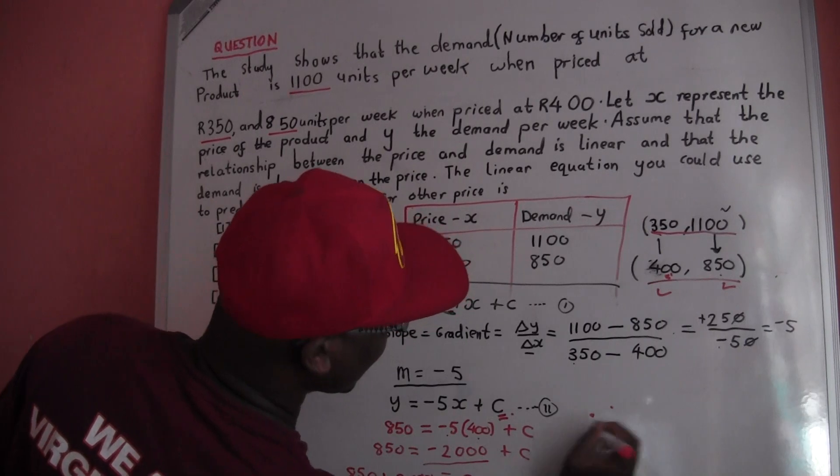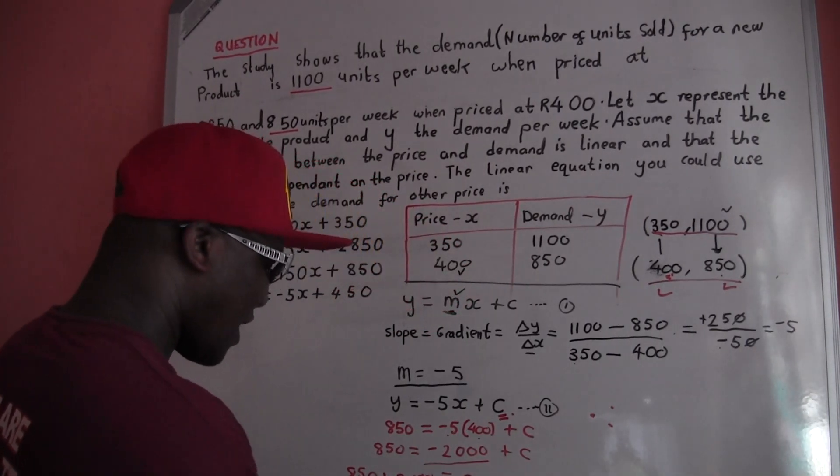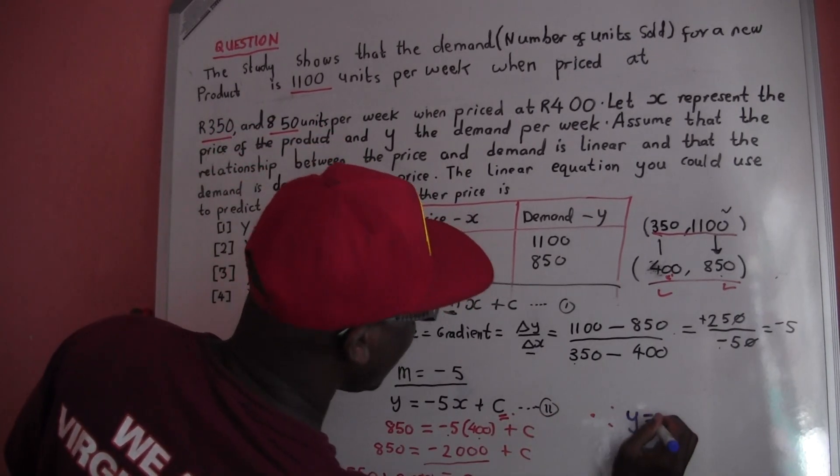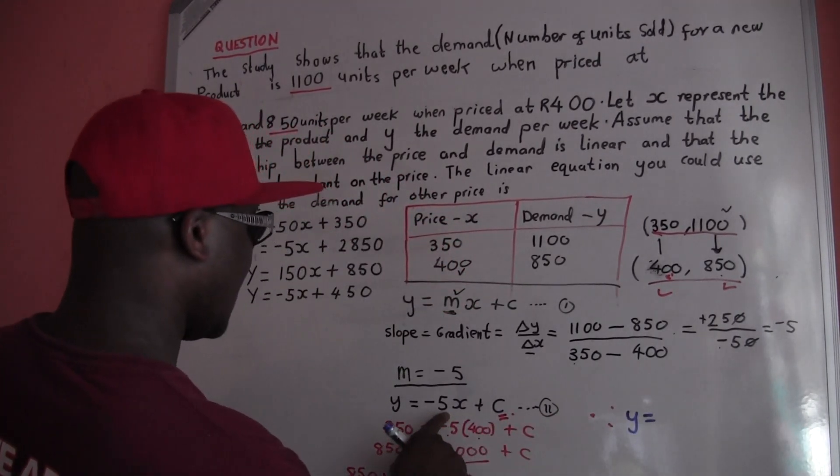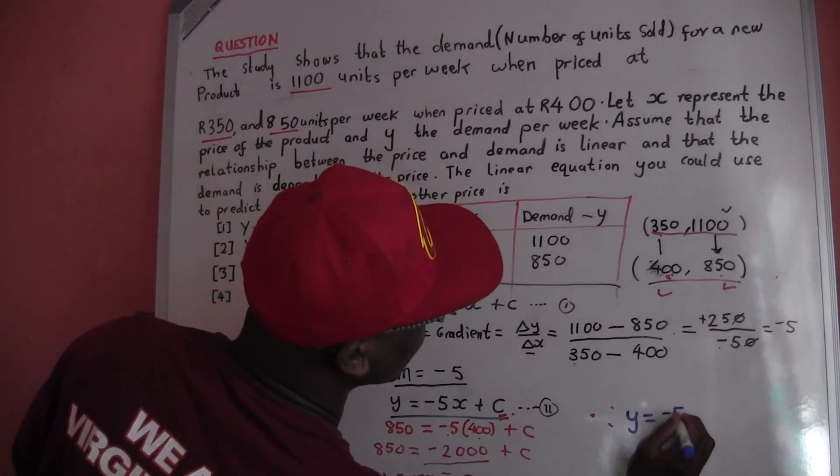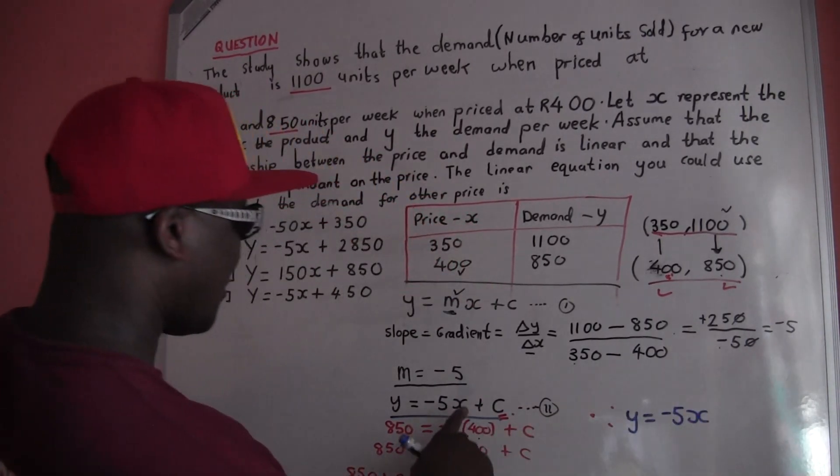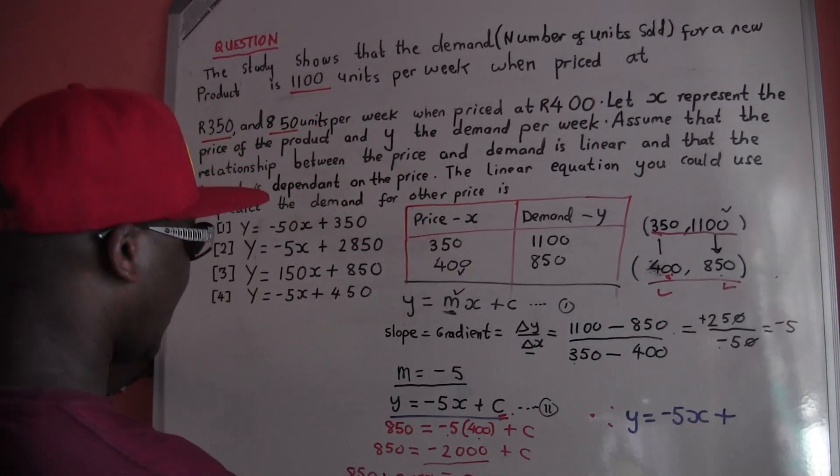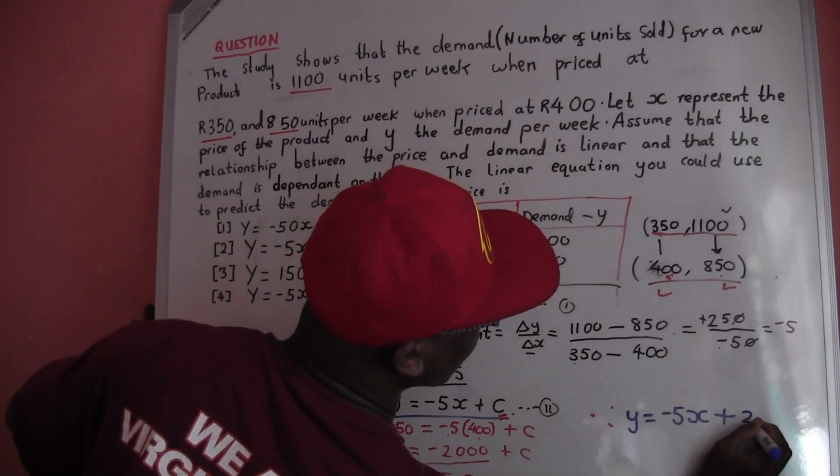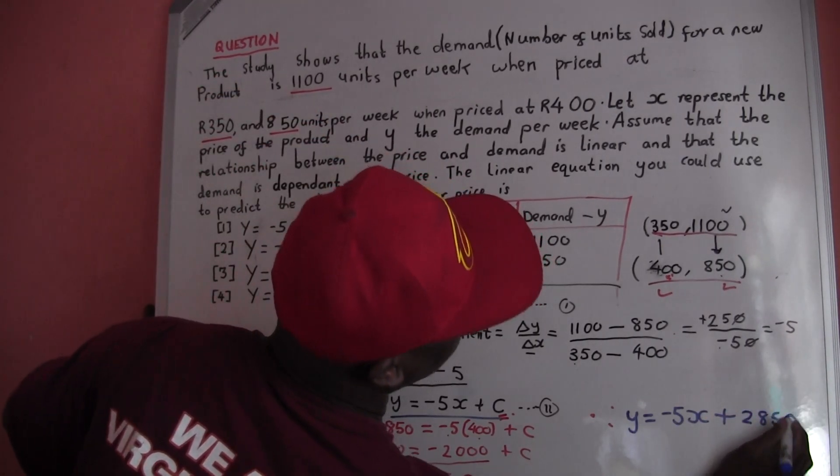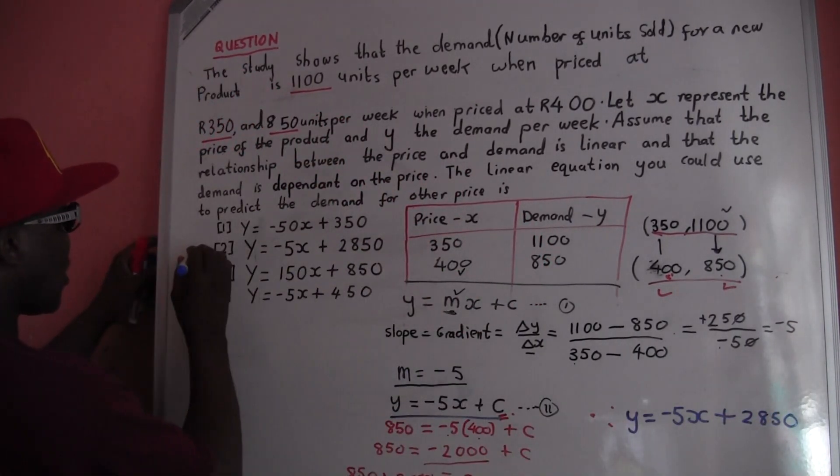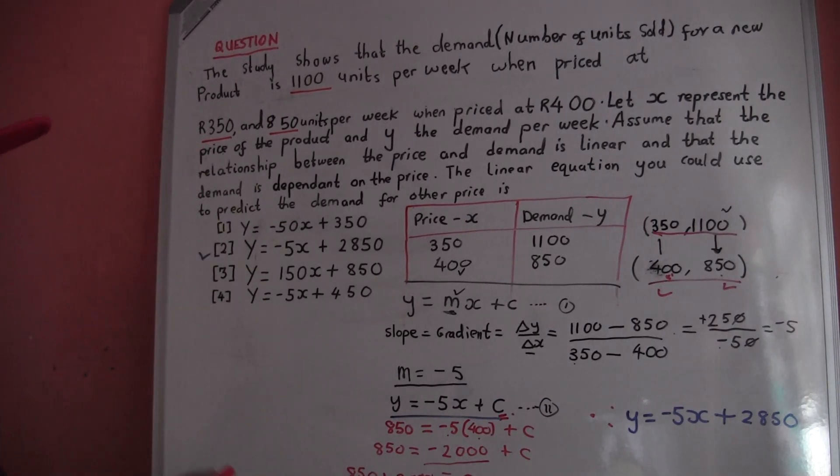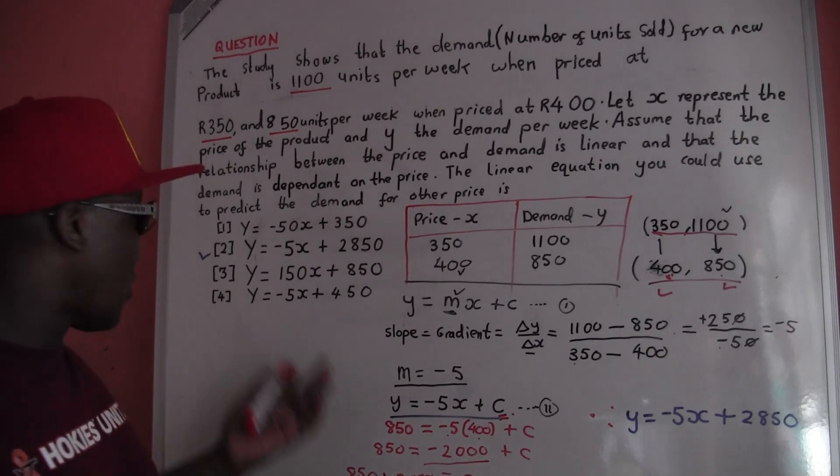So finally, I'll say, let me finalize with a black pen or blue pen. Y equals this one here - negative 5X plus, what is our C? Our C equals 2850. And we come to the option - this is option 2. So that's how you do it. We finish here, option 2.